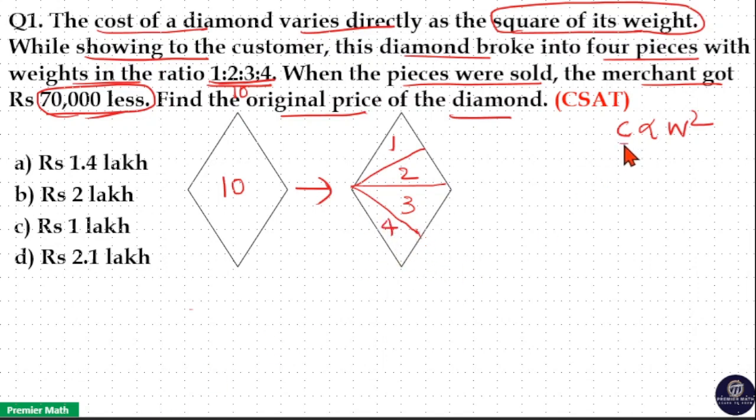Now, the question already says cost is directly proportional to the square of its weight. Which means initially the cost of this 10 unit diamond was 10 square, which is equal to 100 units.